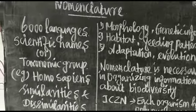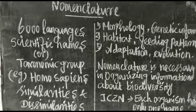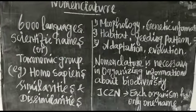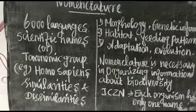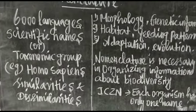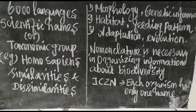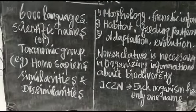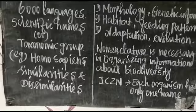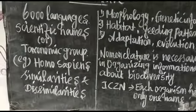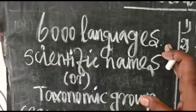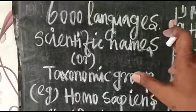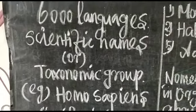Hi students, today we are going to see about nomenclature. Each organism has to be named by this process. These words are probably new to you because these are names of organisms in different foreign languages — they all mean 'human' in different languages. There are presently more than six thousand languages in the world, and animals can be named in more than six thousand ways.